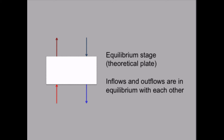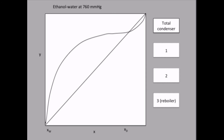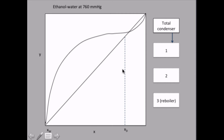So let's make a simple McCabe-Thiele graphical method solution to this system, assuming that we have exactly three equilibrium stages. We have a total condenser in the top, from which we have a liquid flux of a certain composition — namely the distillate composition, xD.